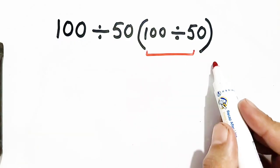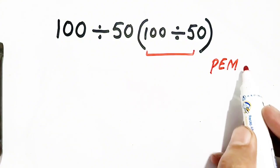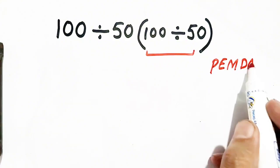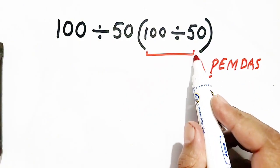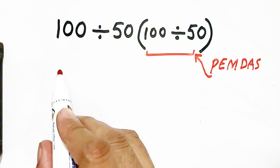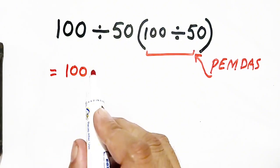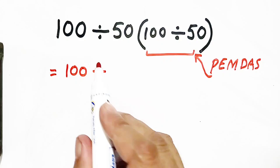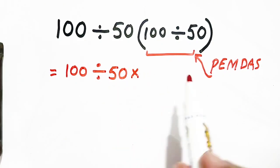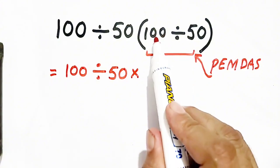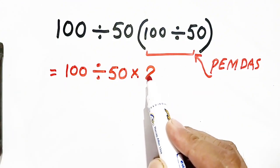Because according to PEMDAS, first of all, parentheses should we solve. So 100 divided by 50 times parentheses have 100 divided by 50, which will be equal to 2.